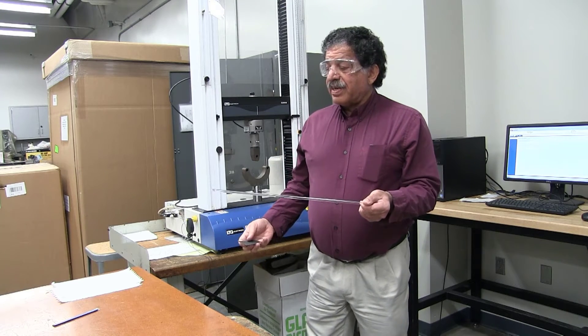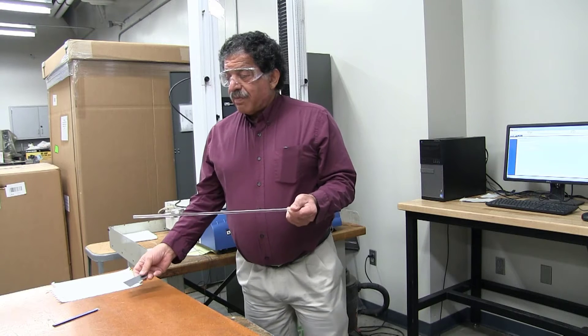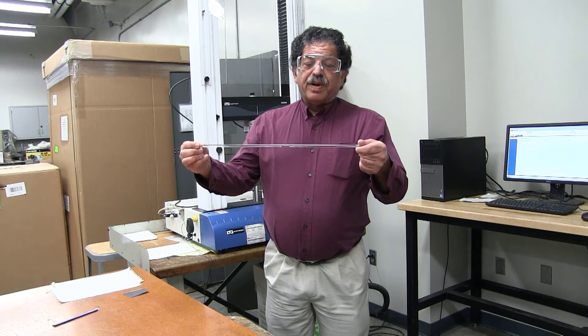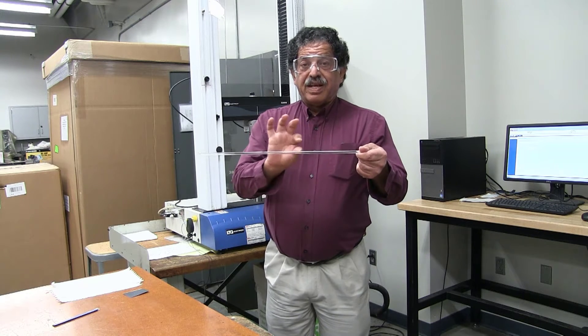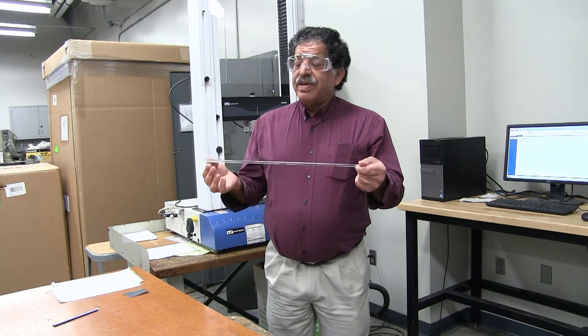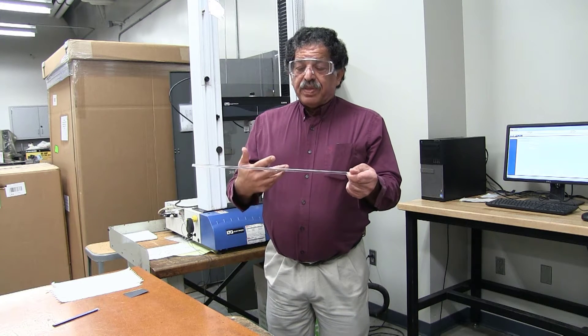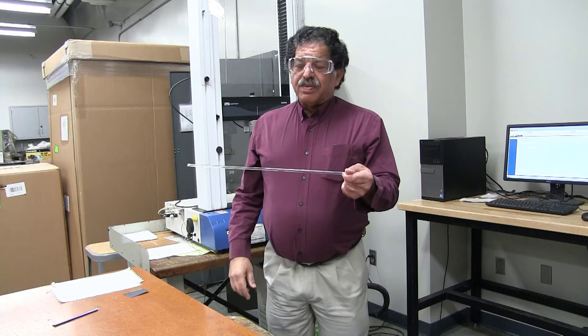So that's going to be our objective today. The way that I'm going to cut my specimens is, and by the way, when you do this experiment, it's important not to touch the center of your specimen with your fingers because the oil from your skin actually can modify the fracture toughness of the glass.